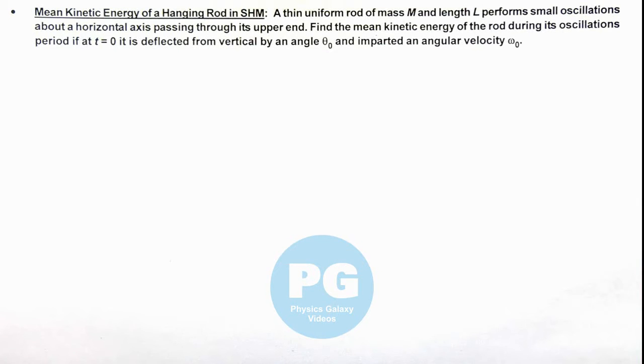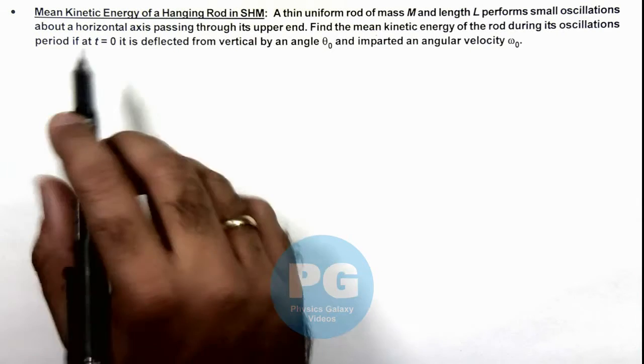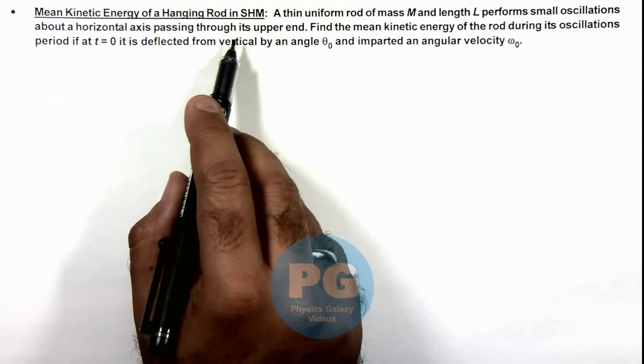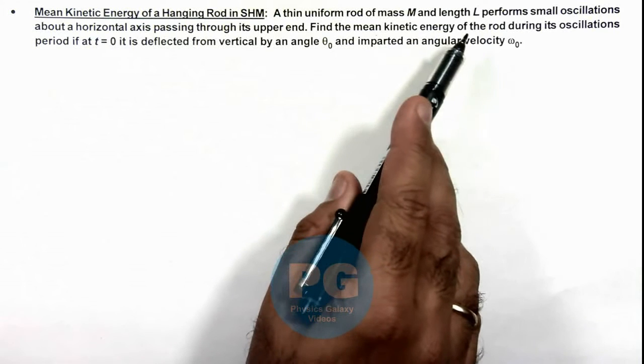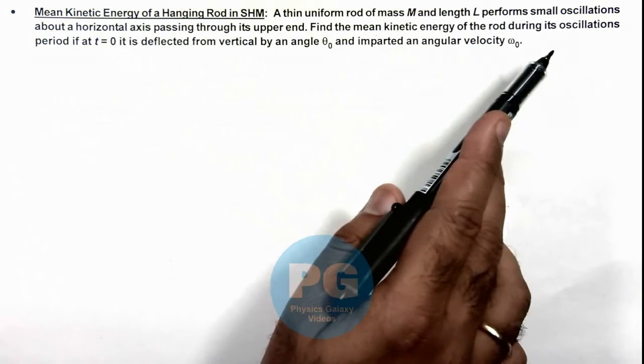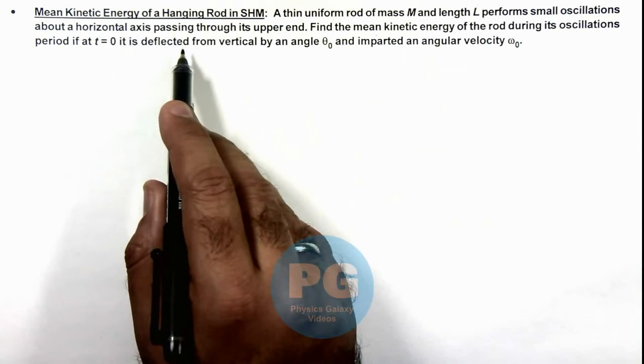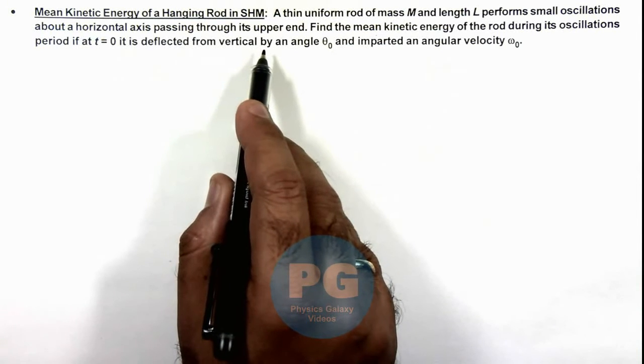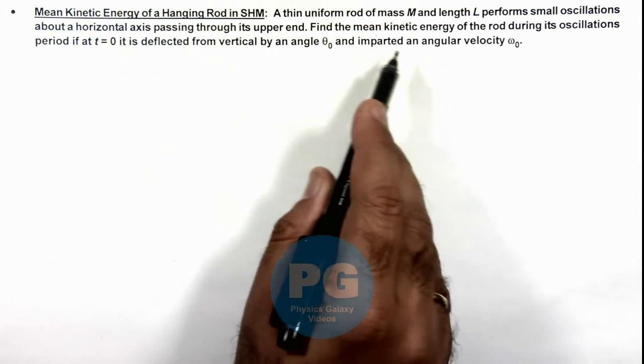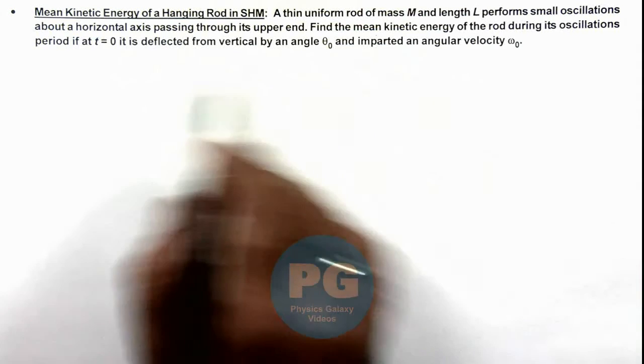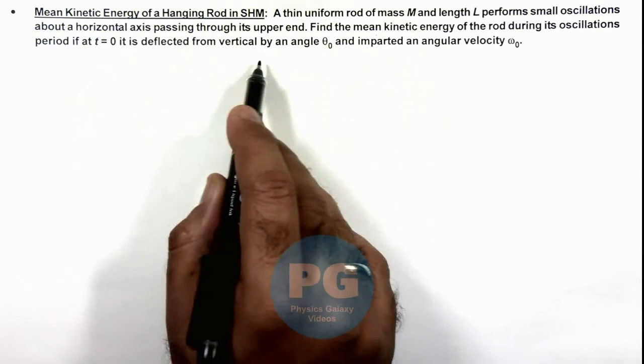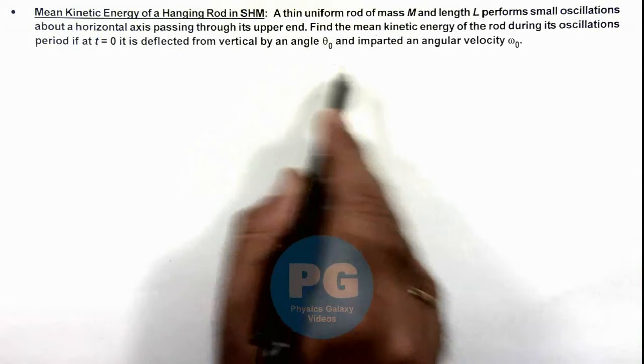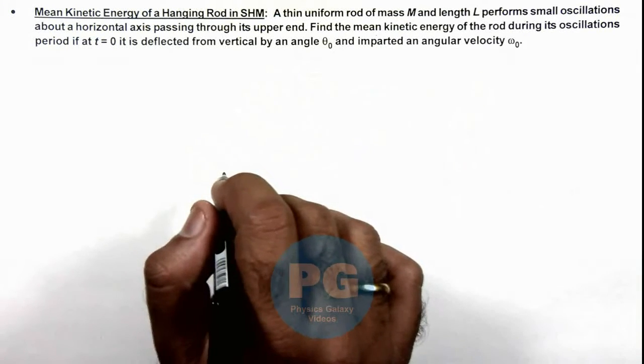In this illustration we'll discuss the mean kinetic energy of a hanging rod in SHM. We are given that a thin uniform rod of mass M and length L performs small oscillations about a horizontal axis passing through its upper end. We need to find the mean kinetic energy of the rod during its oscillation period if at t equals zero it is deflected from vertical by an angle theta not and imparted an angular speed omega not.